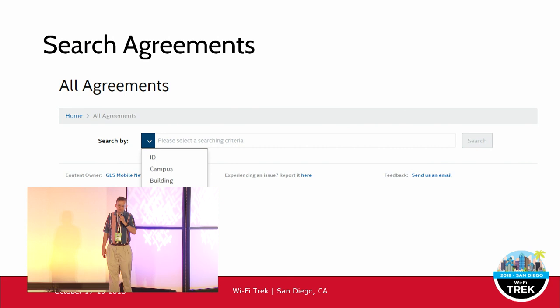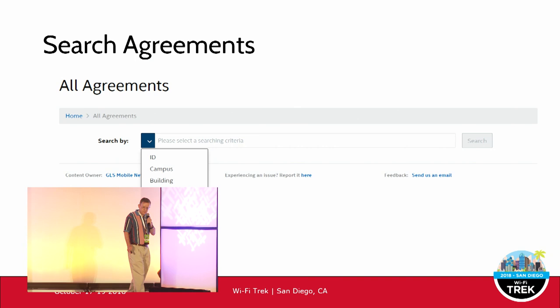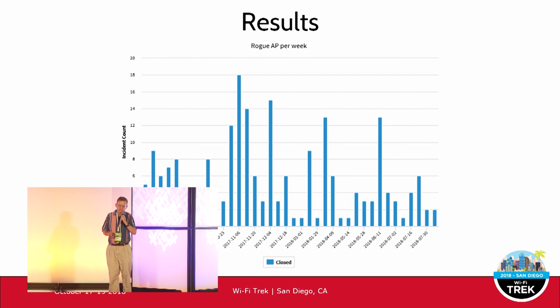There are different ways to look at things in the system. When I have a wireless problem in a building, I can pull up all the access points in that building to see if non-IT APs are contributing to the issue. If agreement names are kept consistent, you can also pull up all agreements for a particular business unit.